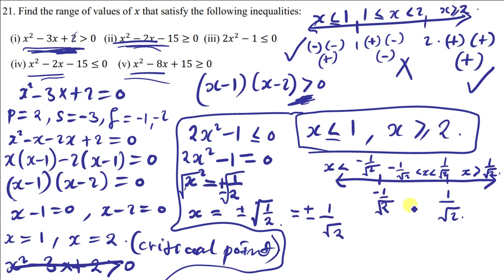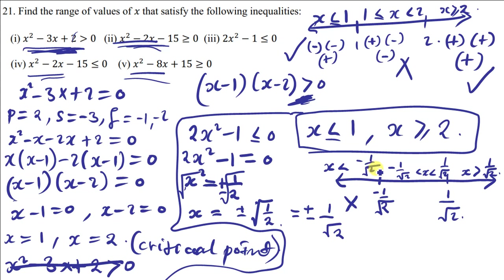For any number less than negative 1 over root 2 — say negative 3 — substituting into 2x squared minus 1: 9 times 2 is 18, minus 1 is 17. Is 17 less than or equal to zero? No — this region is rejected. For the middle region, try zero: 2(0) minus 1 gives negative 1. Is negative 1 less than or equal to zero? Yes — this region is accepted.